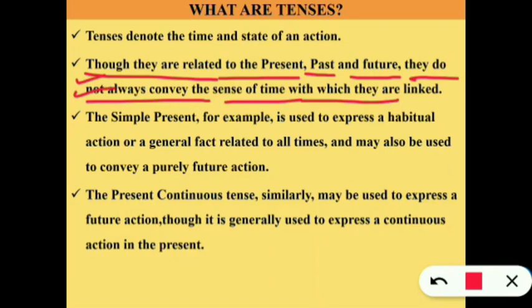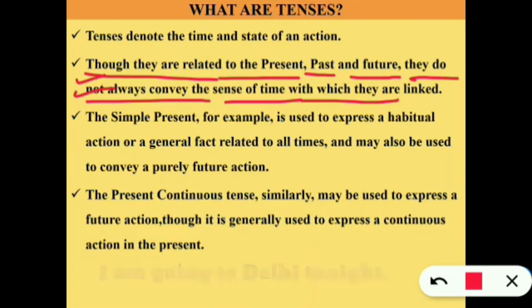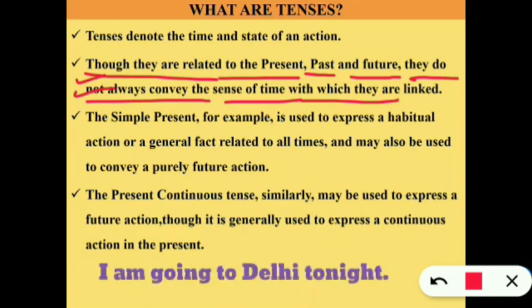For example, 'I am going to Delhi tonight' — this is present continuous tense, but right now the speaker is not going. It will be done in the future. So these kinds of sentences show the state of an action.